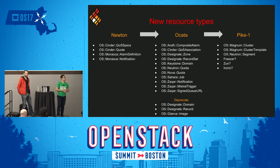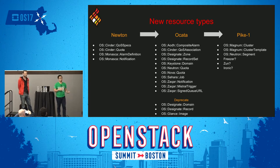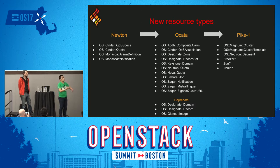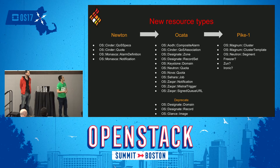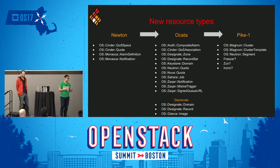Now let's talk about those new resource types which you might find interesting. You're probably using Liberty or Mitaka, and going to upgrade your environment. These are resources you can consider managing via Heat. From Newton we have Magnum, Senlin, QoS, and also Ocata resources including Nova Keystone, Sahara Newton, Designate, Aodh, and Zaqar. We also deprecated Designate for just merge and replace.